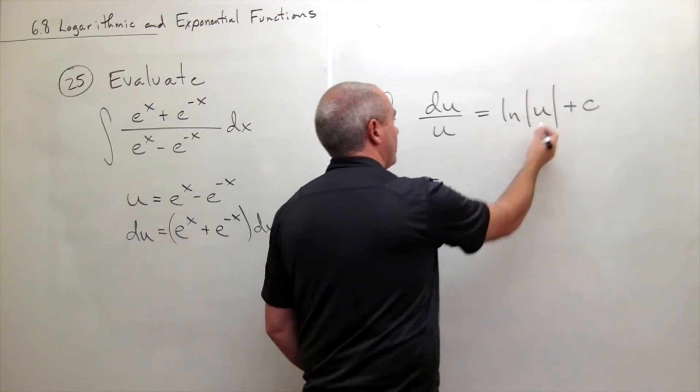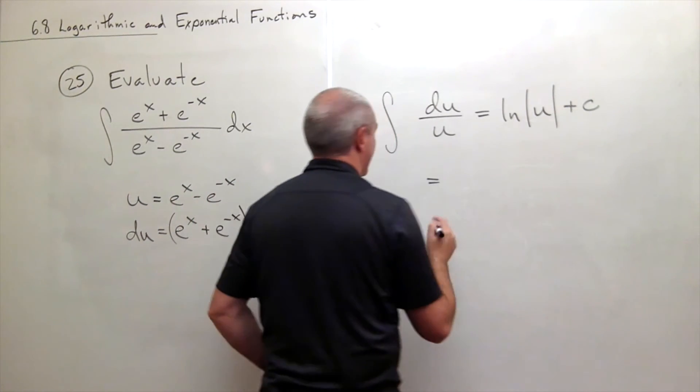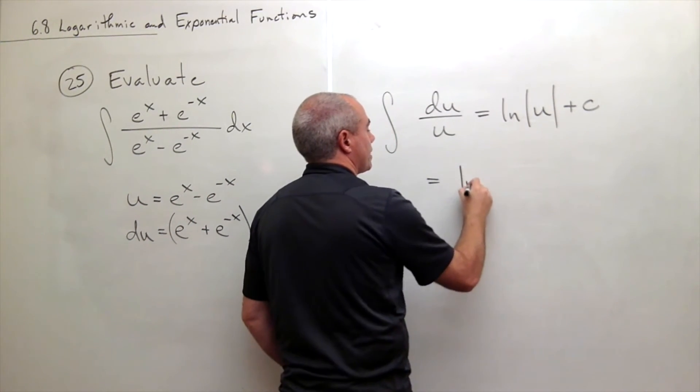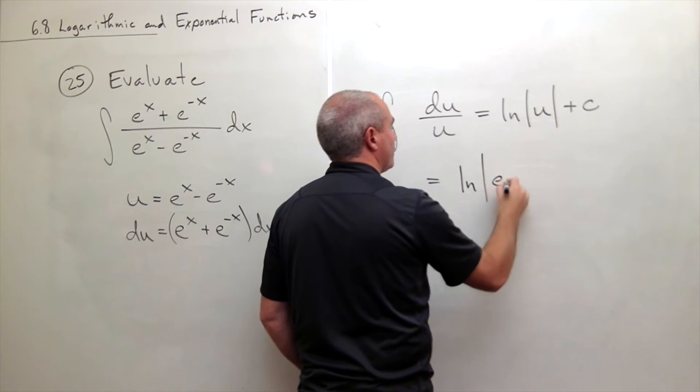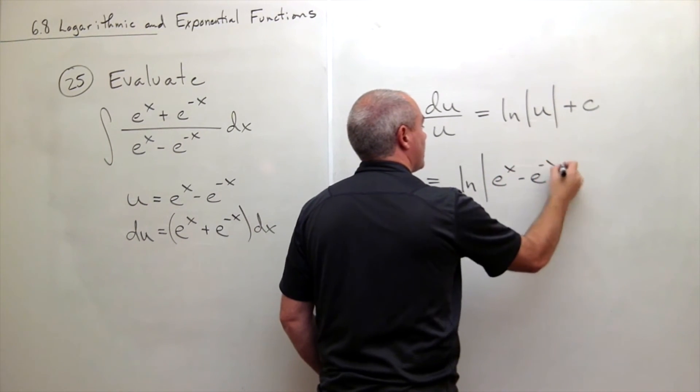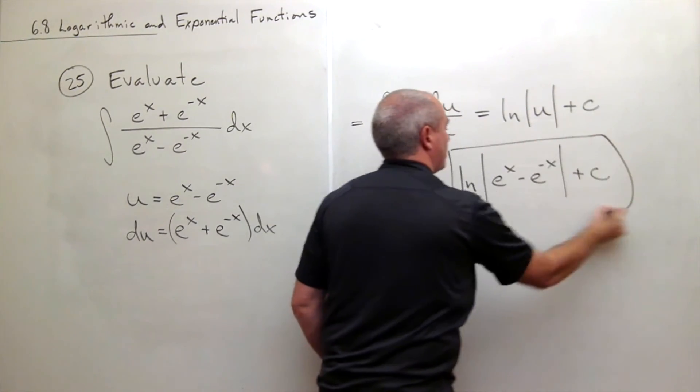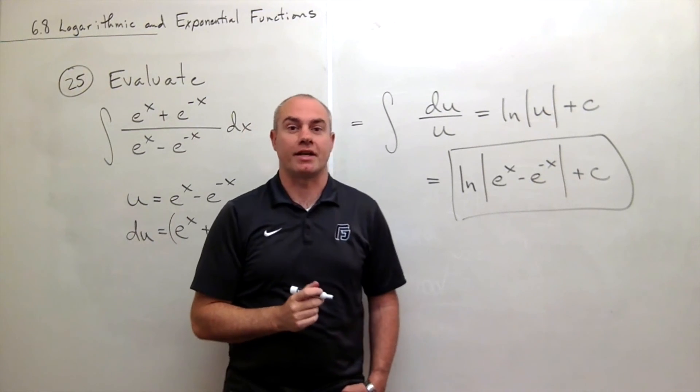And finally we can plug back in for u, u is e to the x minus e to the minus x, so we can just write that this is ln of absolute value of e to the x minus e to the minus x plus c. And we have our anti-derivative.